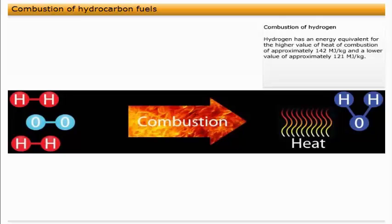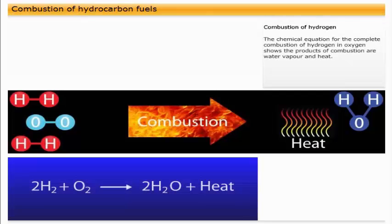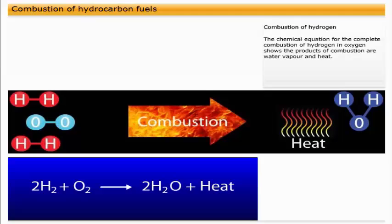Hydrogen has an energy equivalent for the higher value of heat of combustion of approximately 142 megajoules per kilogram and a lower value of approximately 121 megajoules per kilogram. The chemical equation for the complete combustion of hydrogen in oxygen shows the products of combustion are water vapor and heat.